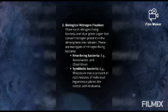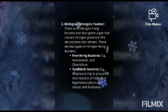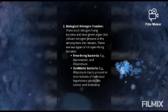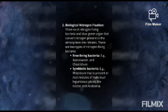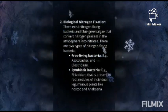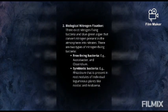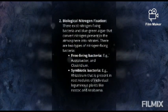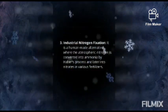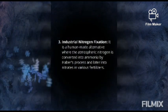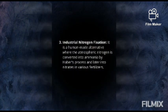Second, biological nitrogen fixation: nitrogen-fixing bacteria and blue-green algae convert atmospheric nitrogen into nitrates. There are two types of nitrogen-fixing bacteria: free-living bacteria and symbiotic bacteria. Third, industrial nitrogen fixation: atmospheric nitrogen is converted into ammonia by the Haber process and later into nitrates used in various fertilizers.